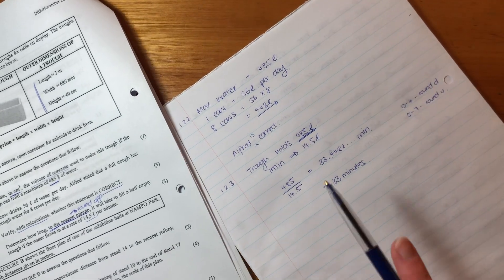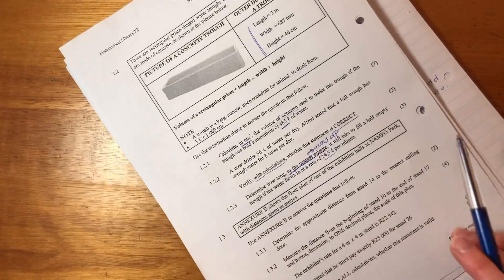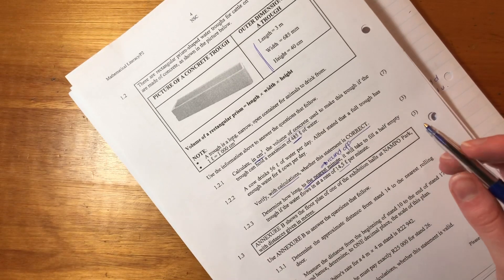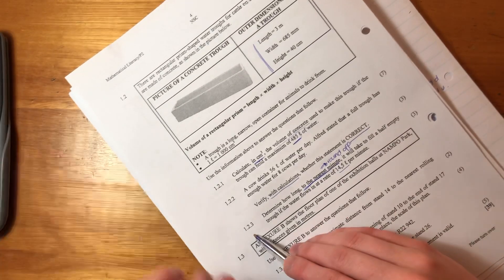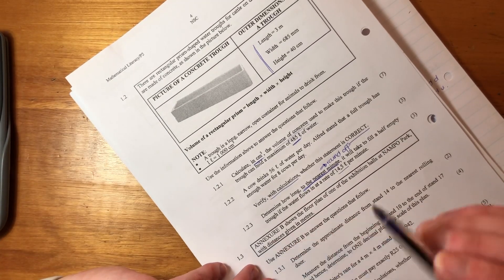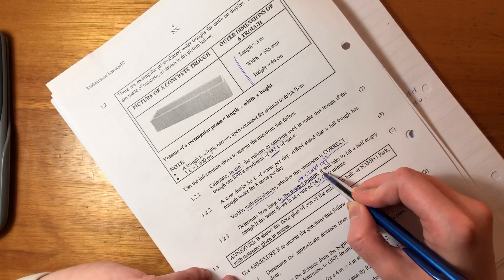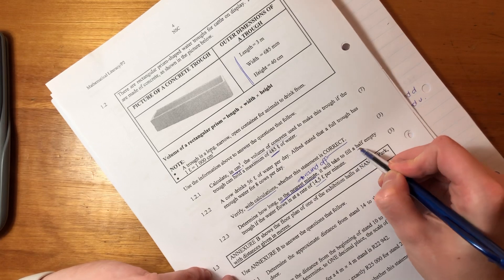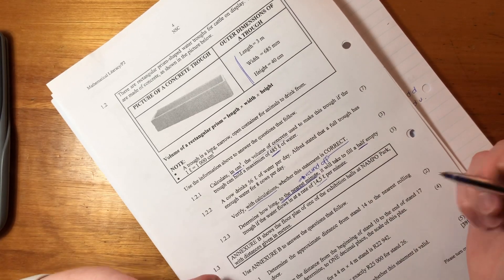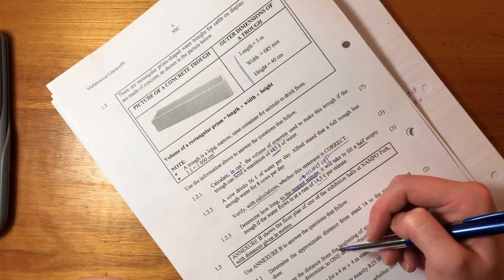Okay guys, so I made a mistake. I just went back and reviewed the question, and I realized I didn't read question 1.2.3 correctly. Look what it says: how long to the nearest minute will it take to fill a half empty trough? So it's really got half the water in it.